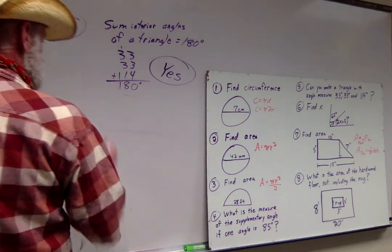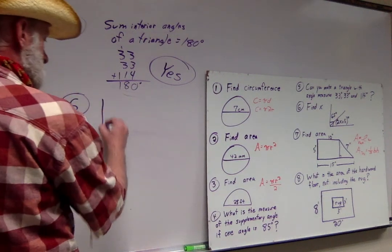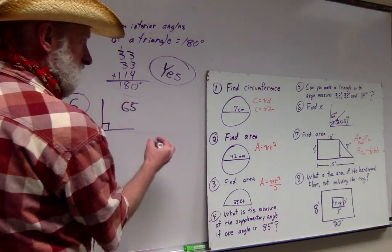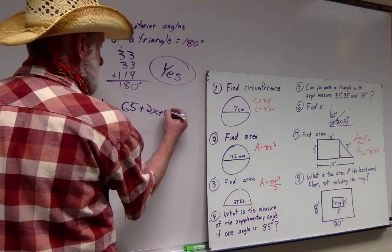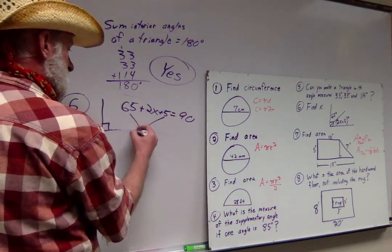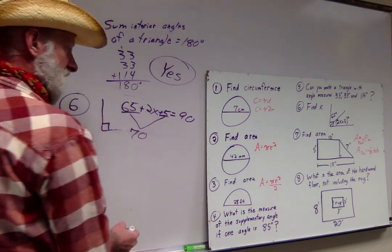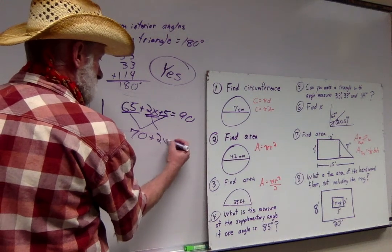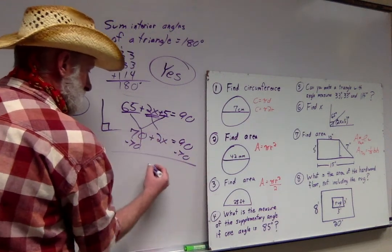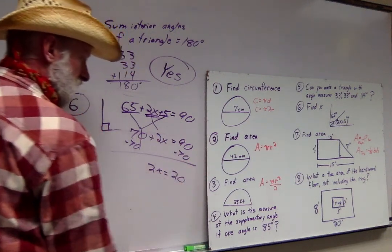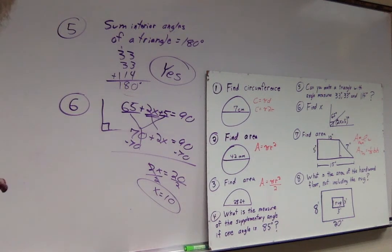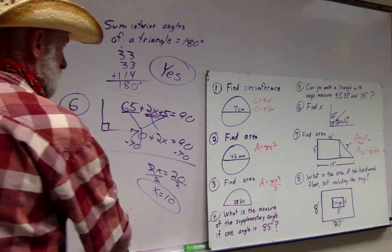Number six. Looks like we got complementary angles there. That means they have to add up to 90 degrees. If I already have 65 degrees, and then I have a 2x plus 5, and all that has to equal 90 degrees, that looks like a nice tricky algebra problem. 65 plus 5 equals 70. This guy does have an x, so I get a 2x. This all still equals 90. Subtract 70 from both sides. 2x equals 20. Divide both sides by 2. X has to be equal to 10.